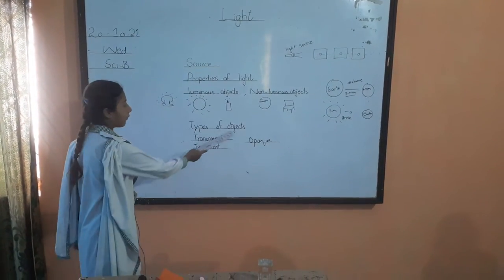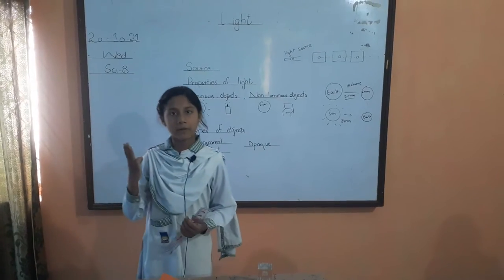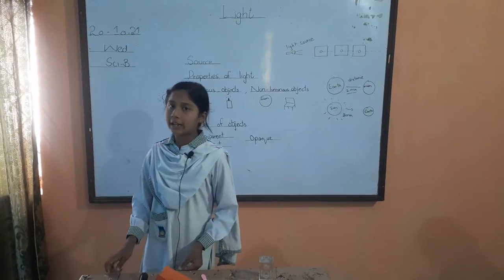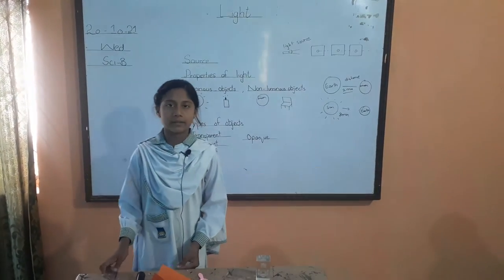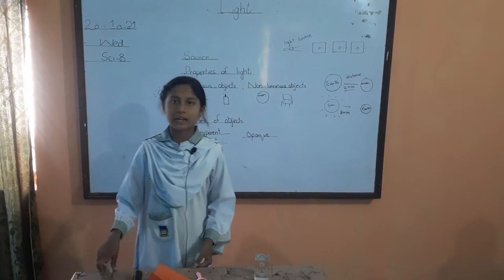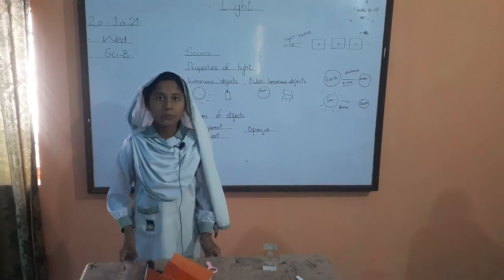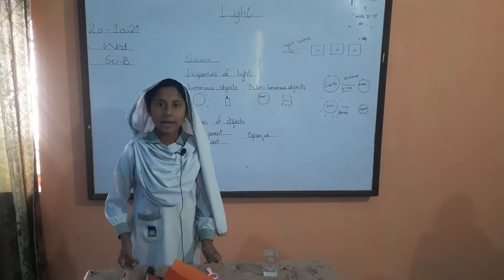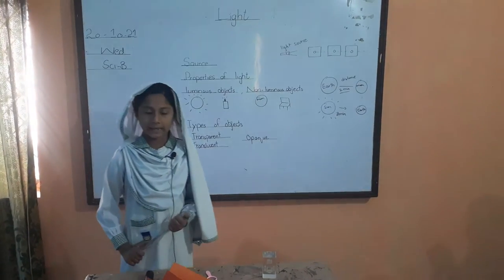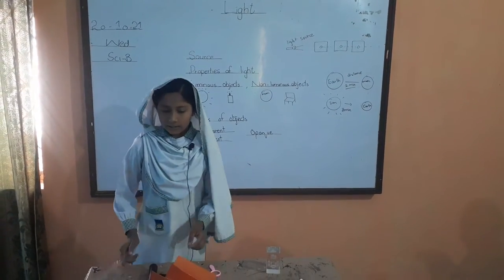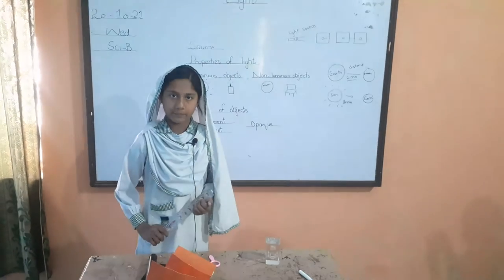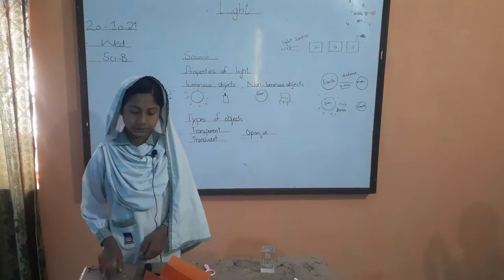Types of objects. There are three types of objects: transparent, translucent, and opaque. The object which allows light to pass through it is called transparent. Like this glass that allows light to pass through it — these are transparent objects.